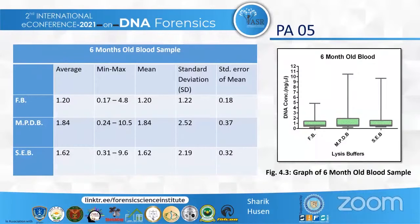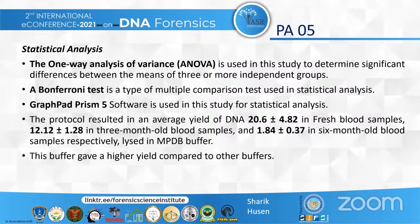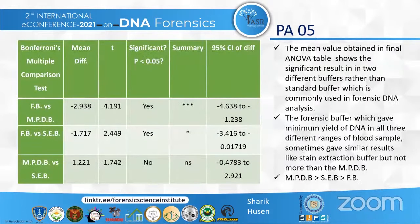In the six-month-old blood samples, the yield was lower overall, but still greater than both the forensic buffer and the SEB buffer. For statistical analysis, ANOVA was used to determine significant differences between the means of three or more independent groups. This statistical analysis was performed using GraphPad Prism 5 software, and the Bonferroni multiple comparison test was used to show significant differences between all buffers. The protocol resulted in average DNA yields of 20.6 ng/µL in fresh blood, 12.2 ng/µL in three-month-old blood, and 1.84 ng/µL in six-month-old blood samples, all highest in the MPDB buffer.